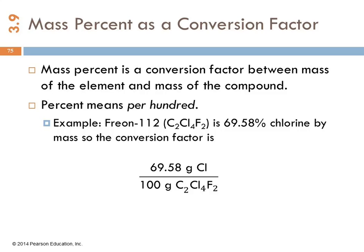Mass percent makes a great conversion factor. It's very helpful to remember that percent means per hundred. Part over whole times 100 doesn't look like that, but really what we're saying is how many per hundred are there. If we are given a percent composition, 69.58 percent chlorine, we can just take that and write it down as 69.58 grams of chlorine per hundred grams of compound. And that allows us to do conversions between the mass of one element in the compound and the mass of the whole compound.